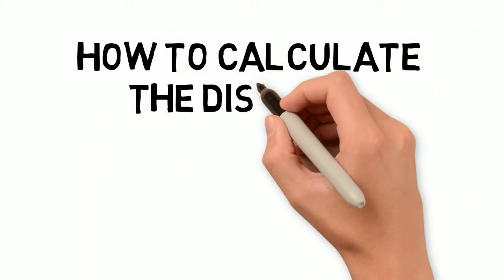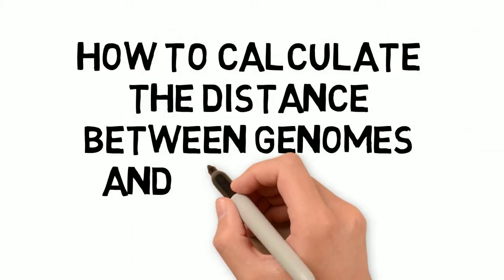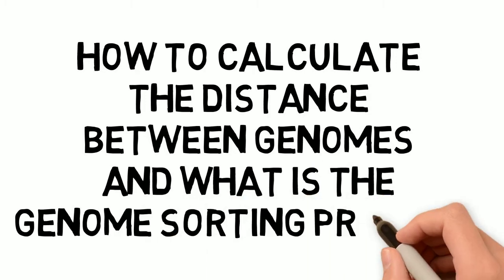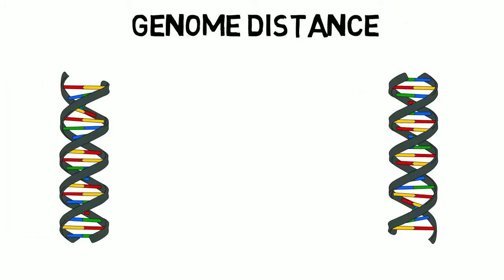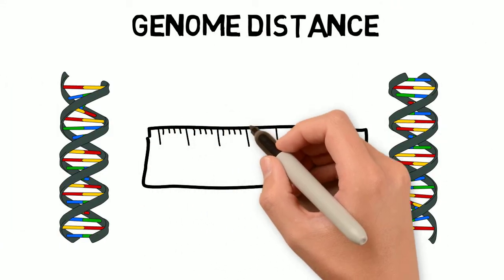How to calculate the distance between genomes and what is the genome sorting problem? Calculating a distance between genomes is a way to measure the genetic divergence between different species or different populations within the species.